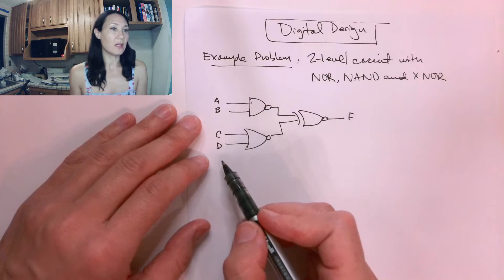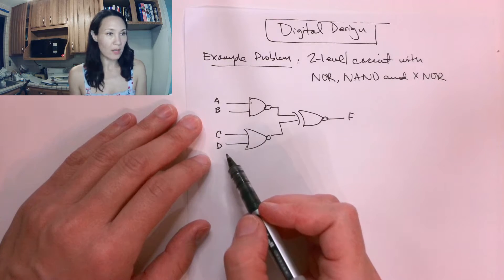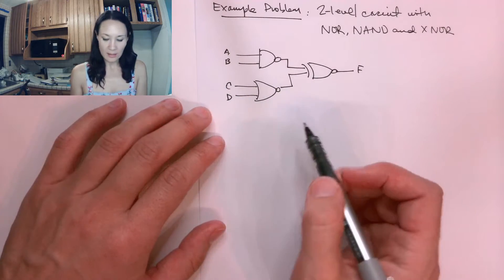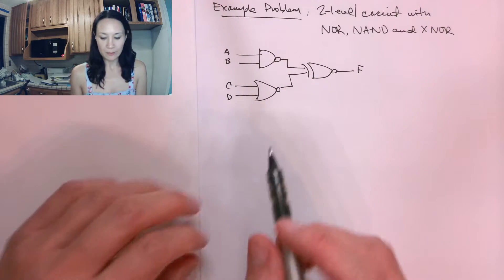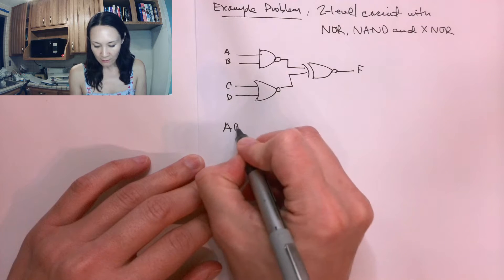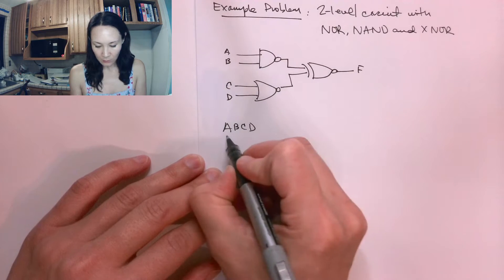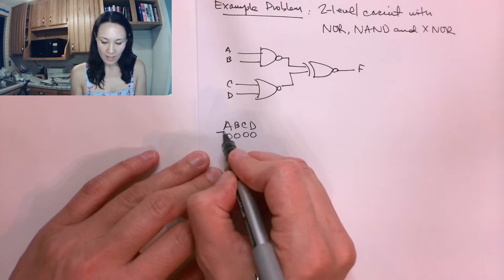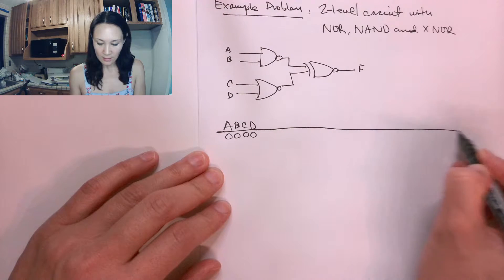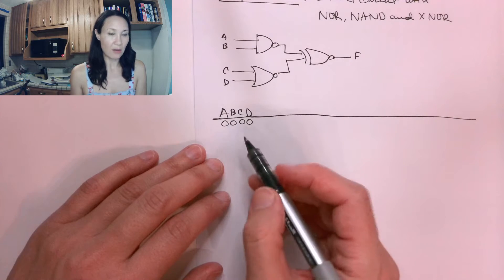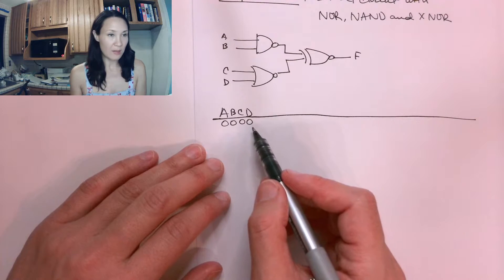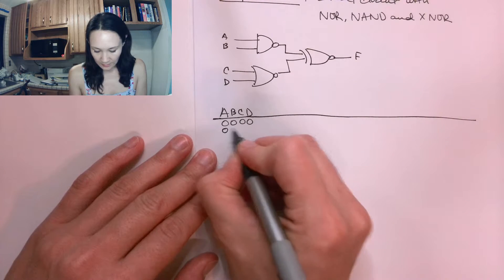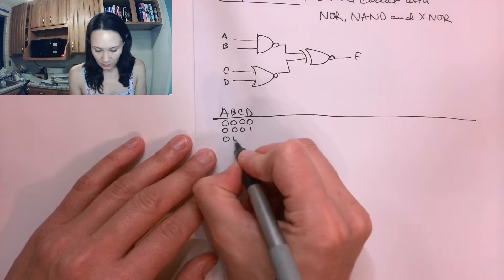This is the first time we've done an example with four inputs, so it's going to be the same process for constructing the truth table, but we're going to have four inputs, which means to hit all of the possible combinations we're going to have to count in binary. With four bits, we're going to have to count all the way to 15. So that'll be 0000, 0001, 0010,